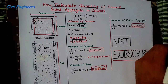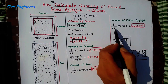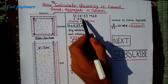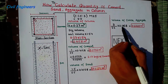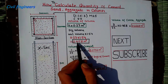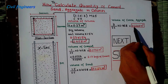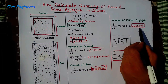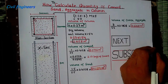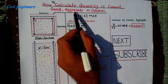Now I want to find out the volume of coarse aggregate. The aggregate ratio is 3, and 5.5 is the sum of ratio for M25. Multiply by the dry volume for the column, which gives you 0.2268 meter cube. So this completes the calculation for the quantity of cement, sand, and aggregate in this column.